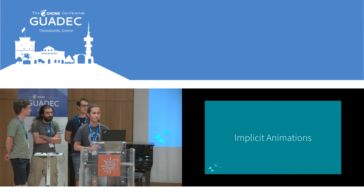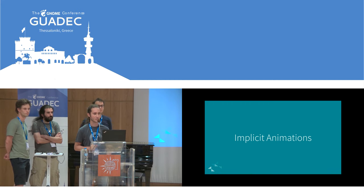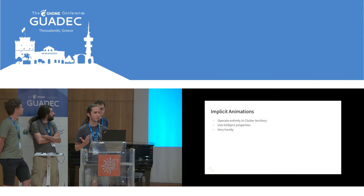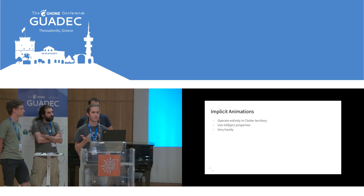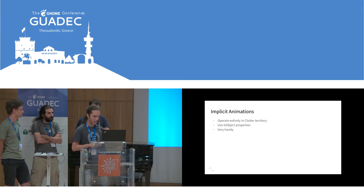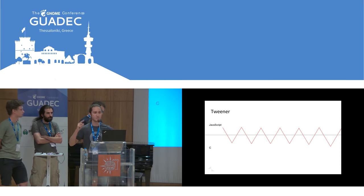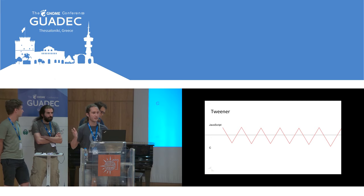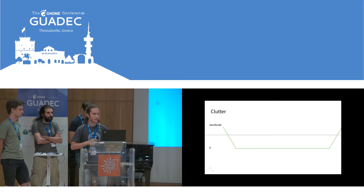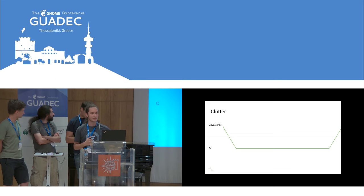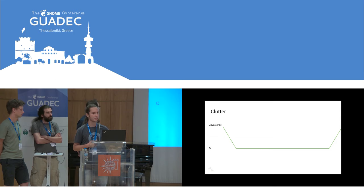Let's start with implicit animations. One of the most recent bigger changes that landed in shell was work by Florian on implicit animations. When animations run in shell, we used to use Tweener, which is a JavaScript-based animator framework. Now we are using Clutter animations directly. When using Tweener, we need to run stuff in JavaScript, which means lots of transitions between JavaScript and C — that's costly, more on the CPU side than the GPU side. With the Clutter animation framework, we reduce a lot of trampolines between JavaScript and C, and that should have a noticeable improvement in how much CPU GNOME Shell uses.